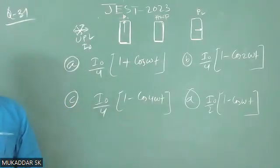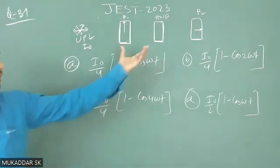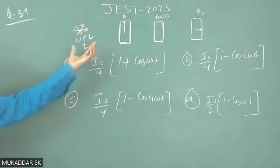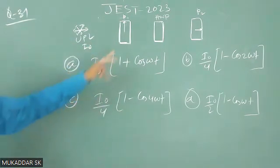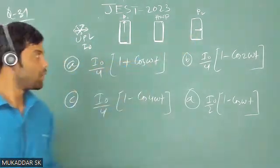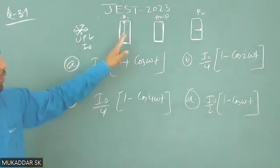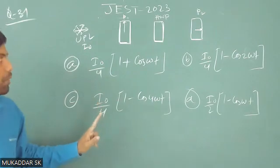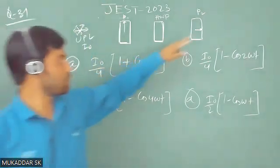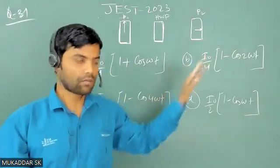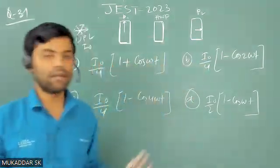Today we are going to solve one more problem from JEE 2023, and this is from optics. Question number 31. In that question it is mentioned that you have unpolarized light having intensity I₀ incident on two cross polarizers. Cross polarizer means the pass axis of the first polarizer is oriented vertically and the pass axis of the second polarizer is oriented horizontally, so the angle between the pass axes is 90 degrees.